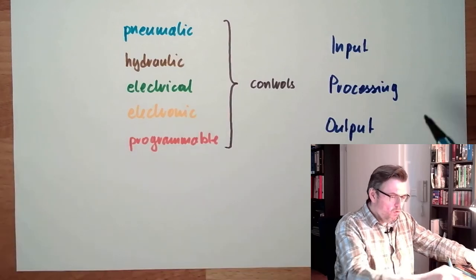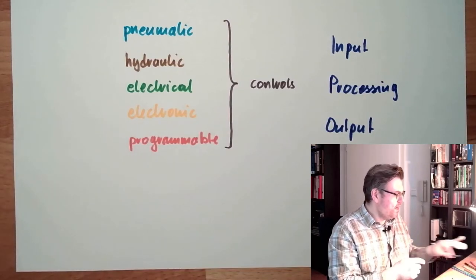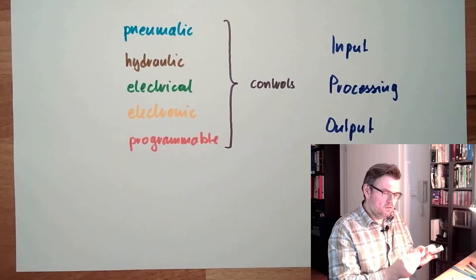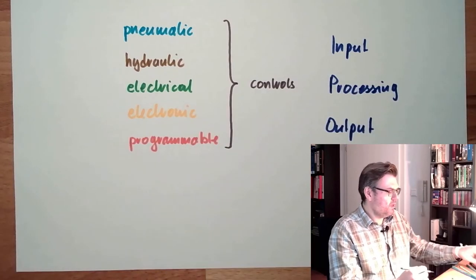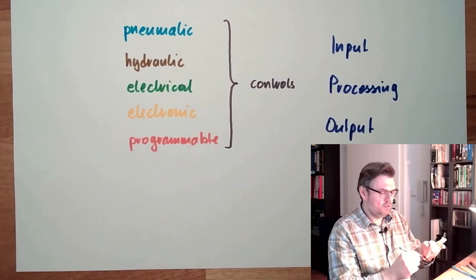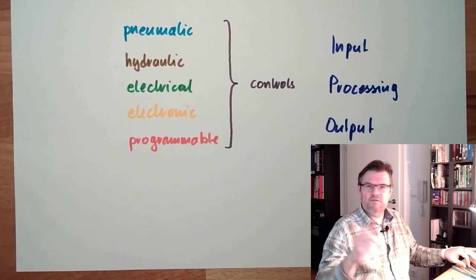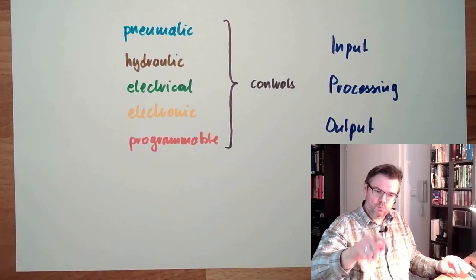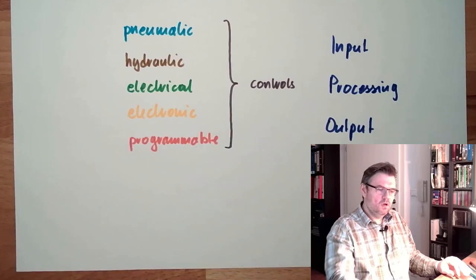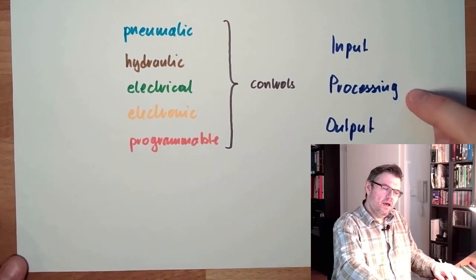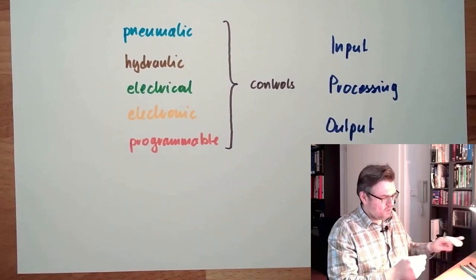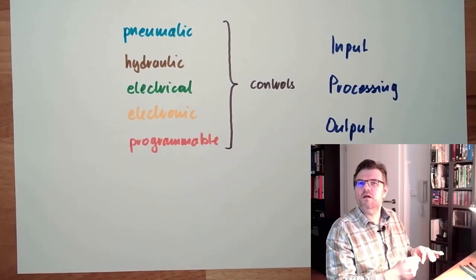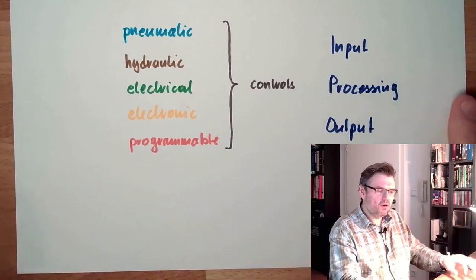All of these elements are available in all of these technologies. There are input elements which work in a pneumatic manner, for instance lever valve or push button valve. There are processing elements also in pneumatic, for instance two pressure valves, something like this we talked about.